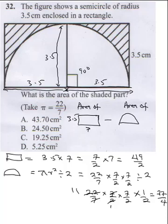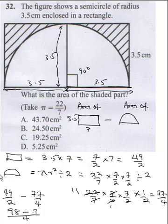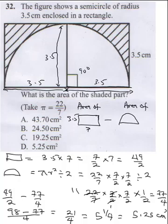So the shaded area is 49 over 2 minus 77 over 4. Using LCM of 4: (2 times 49 minus 77) over 4 equals (98 minus 77) over 4 equals 21 over 4, which is 5 and 1 quarter, or 5.25 cm squared. The correct answer is D.